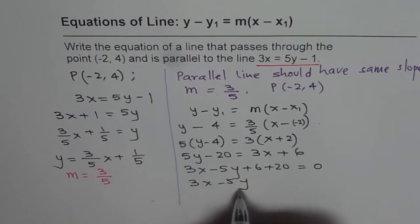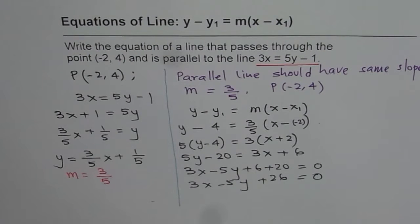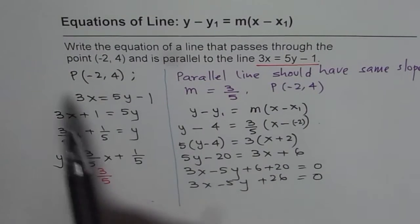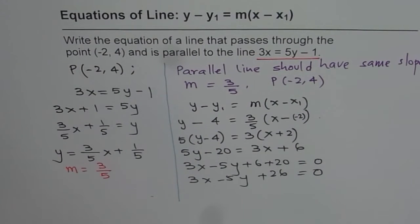So 3x minus 5y plus 26 equals to 0 is the equation of line in standard form, which is parallel to the given line, and it passes through the point minus 2, 4. I hope the steps are absolutely clear to you. Thank you.